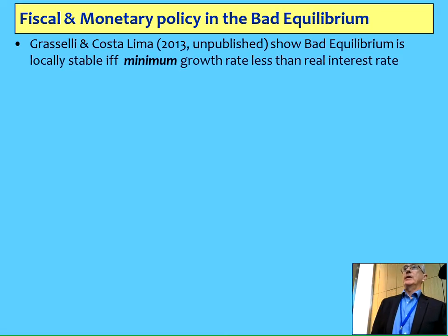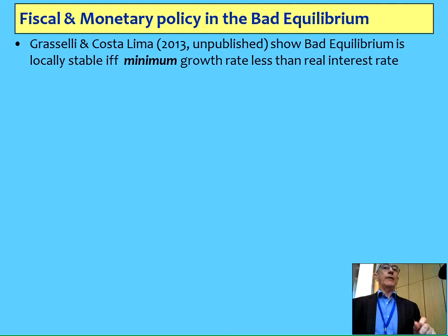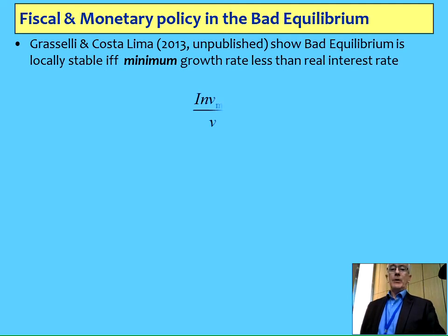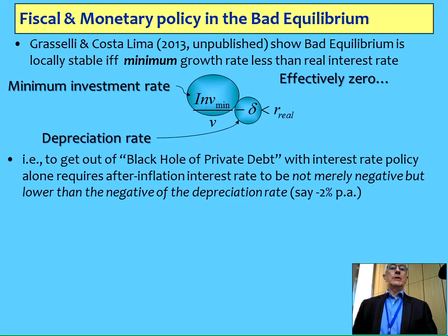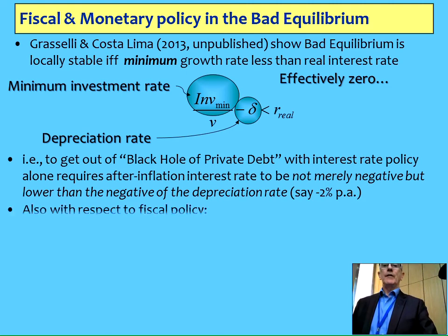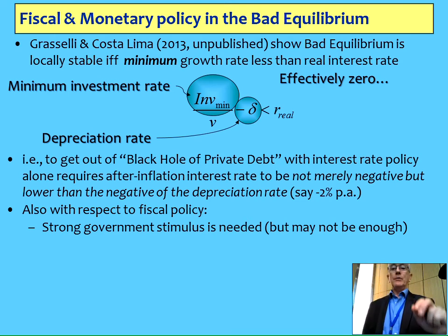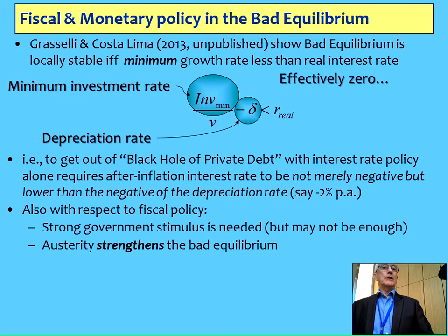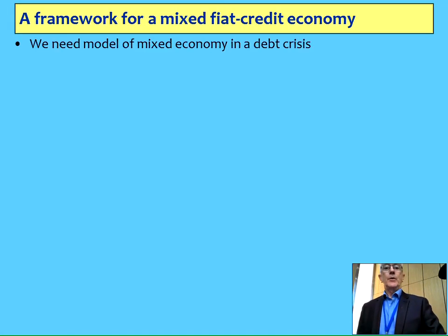What do you do facing the bad equilibrium? Mathematicians Grasselli and Costa Lima showed that the bad equilibrium can be made locally unstable — which is what you want — if and only if the minimum growth rate is less than the real interest rate. The minimum growth rate is the level of investment when profits are minus infinity, effectively zero, minus the depreciation rate. This implies that if you wanted to use negative interest rate policies, you'd need rates lower than negative the depreciation rate — at least minus 2% to minus 3%. If you want to do it by fiscal policy, you need a stimulus. Austerity actually makes that bad equilibrium stronger and more likely. That's what Europe is finding out the hard way right now.